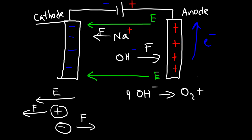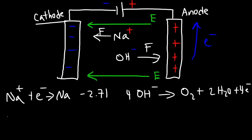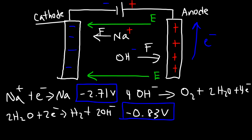Once the hydroxide ions make contact with the anode, they give up their electrons, causing current to flow in the circuit, and they are oxidized into oxygen gas. The reaction is: O₂ + 2H₂O + 4e⁻. Sodium is not going to be reduced at the cathode. If sodium picked up an electron and turned into sodium metal, the cell potential for that process is -2.71 V, whereas if water is reduced to hydrogen gas the cell potential is only -0.83 V. So it's much easier to reduce water at the cathode than sodium.